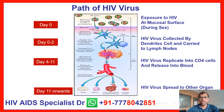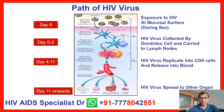From day 4 to 11, the HIV virus replicates into CD4 cells and is released into the blood. From day 11 onwards, the HIV virus spreads to other organs. So it is clearly visible that it requires at least 10 to 11 days for the HIV virus to spread to different parts and organs of our body.